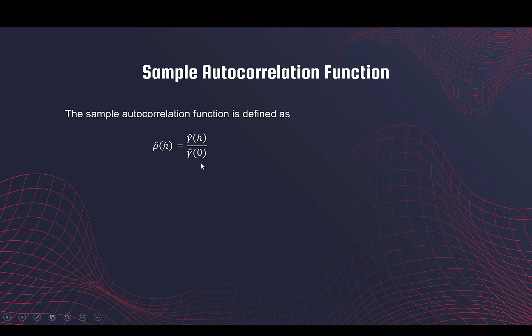As you can guess, sample autocorrelation is sample autocovariance divided by the standard deviation. Remember, h equals zero gives you the variance or the standard deviation.